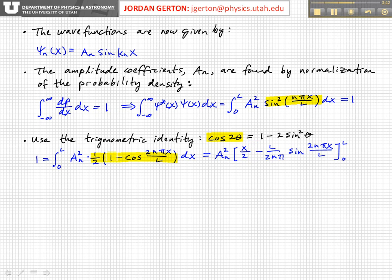From the first term here, we get x over 2. From the second term, we get the integral of cosine is a sine, and then we basically have to deal with the argument here, L over 2 n pi, and we evaluate the integral between 0 and L.